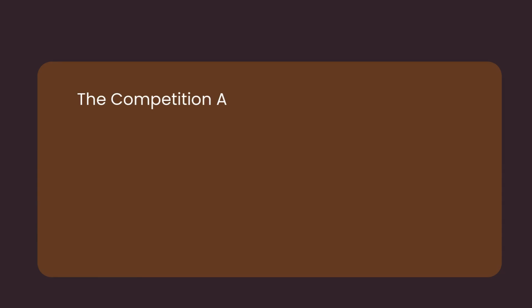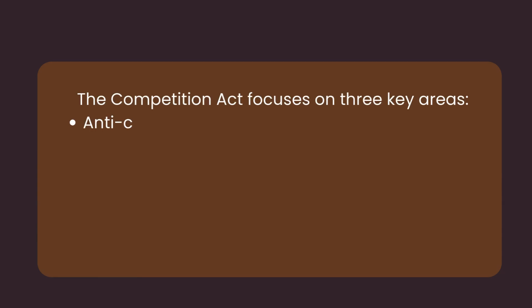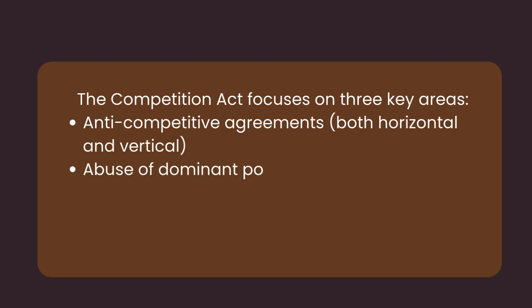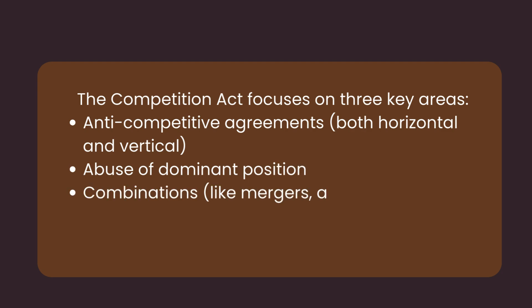The Competition Commission focuses on three key areas. Number one, anti-competitive agreements, both horizontal and vertical. Number two, abuse of dominant position. And number three, combinations like mergers, acquisitions, and amalgamations.